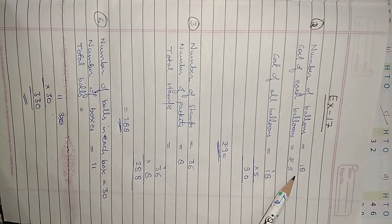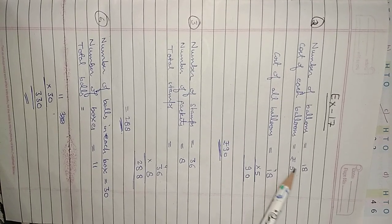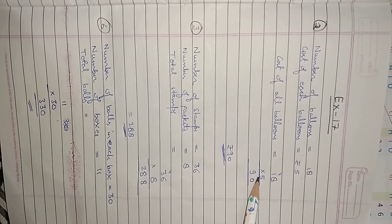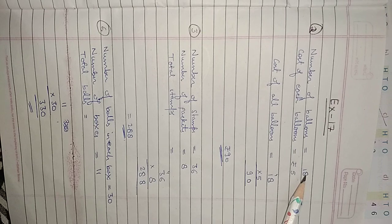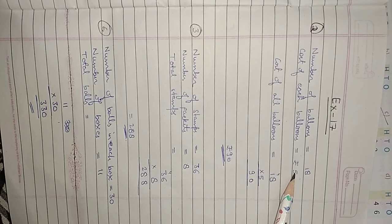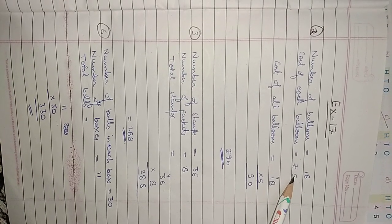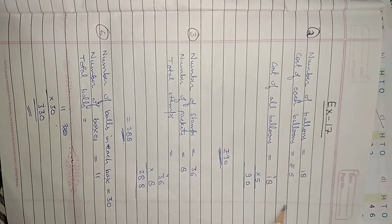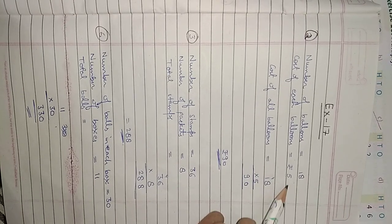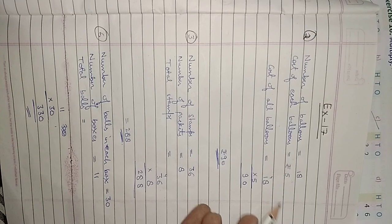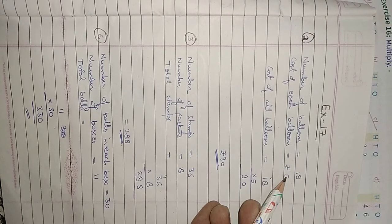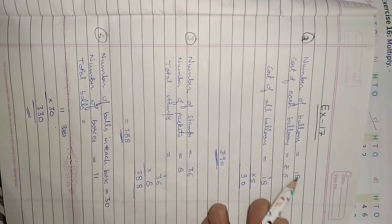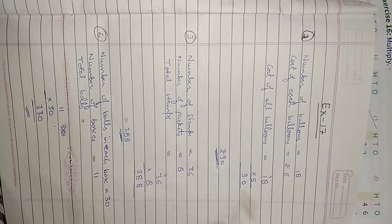Number of balloons is 18 and cost of each balloon is 5 rupees. To find the cost of all balloons, we multiply 18 by 5. When you multiply the cost per balloon by the number of balloons, you get the total cost. So the total cost of all 18 balloons is 90 rupees.